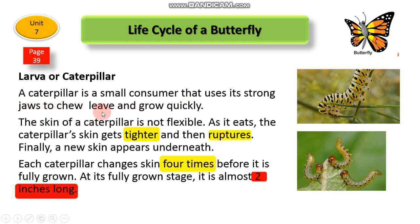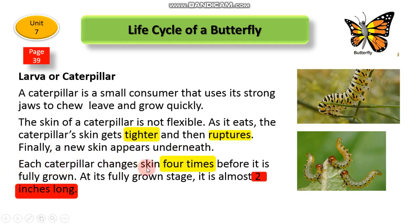The skin of a caterpillar is not flexible. As it eats, the caterpillar's skin gets tighter and then ruptures. A new skin appears underneath. Each caterpillar changes skin four times before it is fully grown.